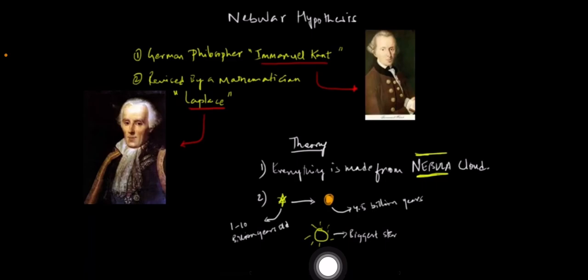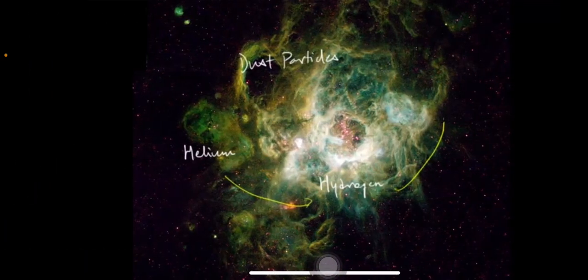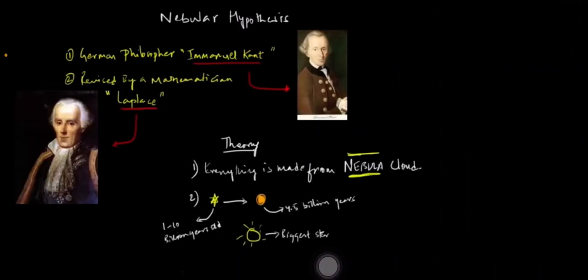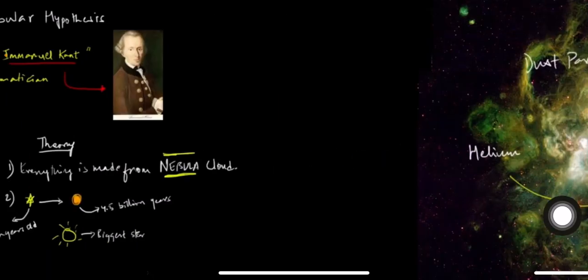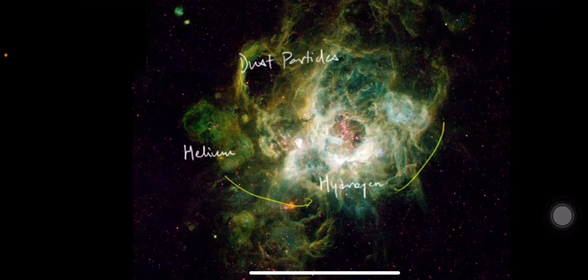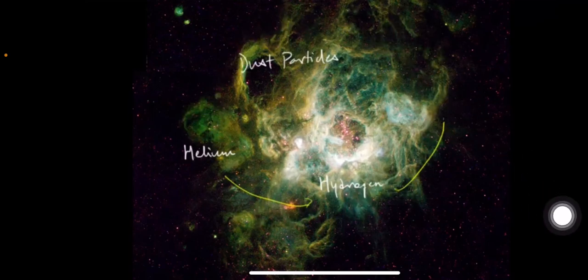The nebular cloud theory tells us that planets are approximately 5 billion years old, and stars are approximately 1 to 10 billion years old. The sun is the biggest star. The nebular cloud was made up of helium, hydrogen, and dust particles. These elements started rotating very heavily.